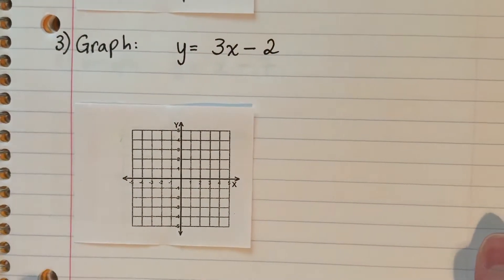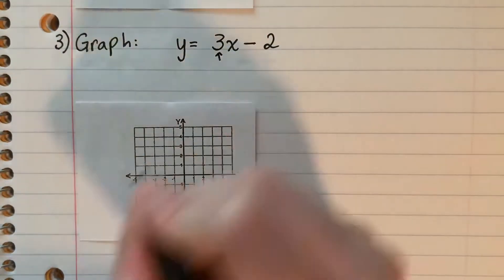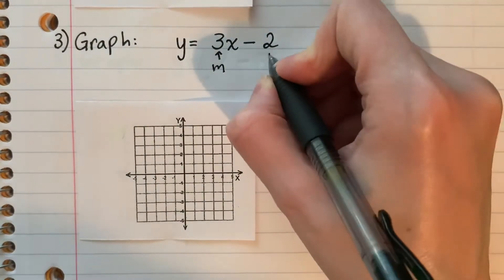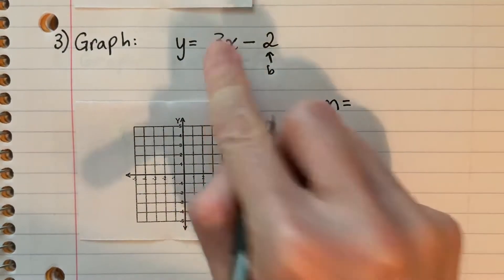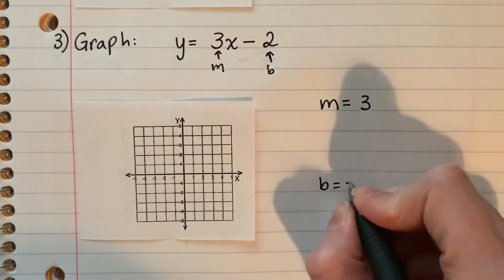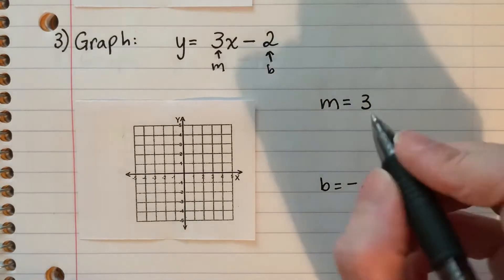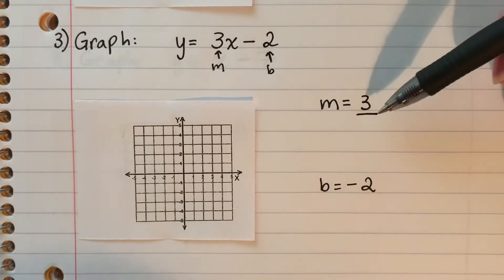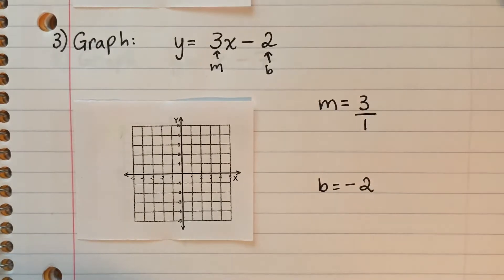Number three: graph y equals three x minus two. The number with x is the slope m, and the number without an x is b, the y-intercept. So m equals three and b is negative two. Here I only have one number — no denominator — so if there's no number down, I put one, because three divided by one is three.